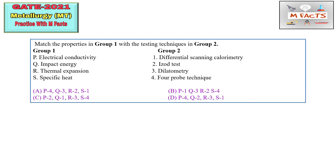The next question is from material properties and testing techniques. Group 1 has some properties and Group 2 has testing techniques — we need to match them. Write PQRS and find the one you know. The odd one here is impact energy, which can be measured through the Charpy test, so Q you can match by 2. Hardenability can be measured through the Jominy test, so R you can match with Jominy.